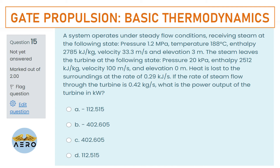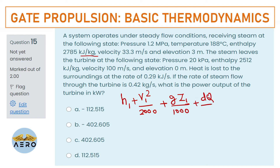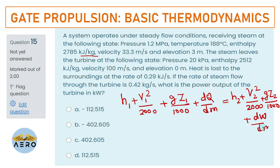Given the heat loss rate and mass flow rate through the turbine, find the power output in kW. The values are given in kJ/kg. The formula to use is: H₁ + V₁²/2000 + gZ₁/1000 + dQ/dm = H₂ + V₂²/2000 + gZ₂/1000 + dW/dm.